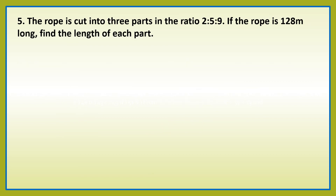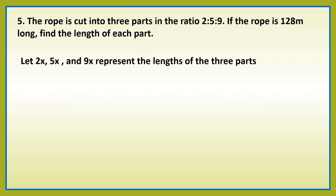Number 5: the rope is cut into 3 parts in the ratio 2 is to 5 is to 9. If the rope is 128 meters long, find the length of each part. Let 2x, 5x, and 9x represent the lengths of the 3 parts. Let us add yung tatlong parts ng rope: 2x plus 5x plus 9x. Then equate to 128, kasi yan yung pinakahaba ng rope.